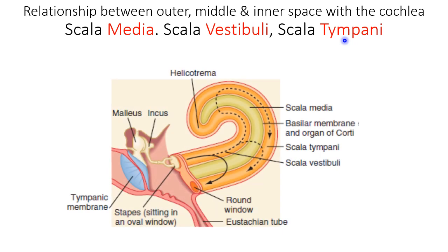From the last class, we know there are three ossicles inside the middle ear, and the smallest one — the footplate of the stapes — ends on the oval window.